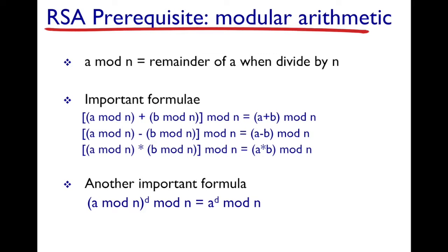A very important formula related to modular arithmetic is (a mod n) to the power of d, and then another mod n done on this entire thing, is the same as a to the power of d mod n.